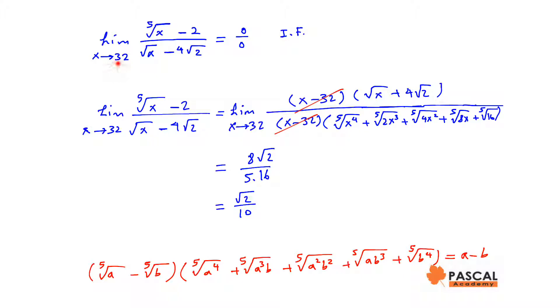If we use direct substitution, we'll see both the numerator and the denominator are approaching 0 when x approaches 32. The limit is in the form of 0 over 0, which is an indeterminate form.